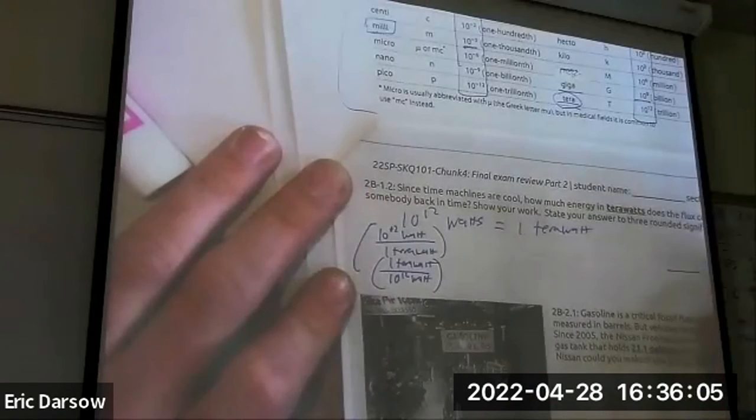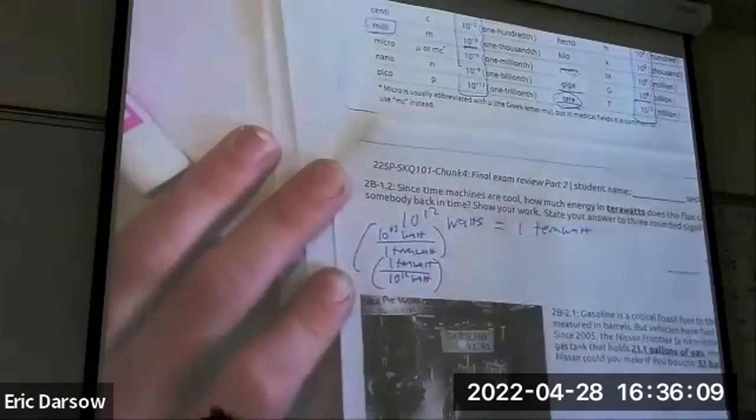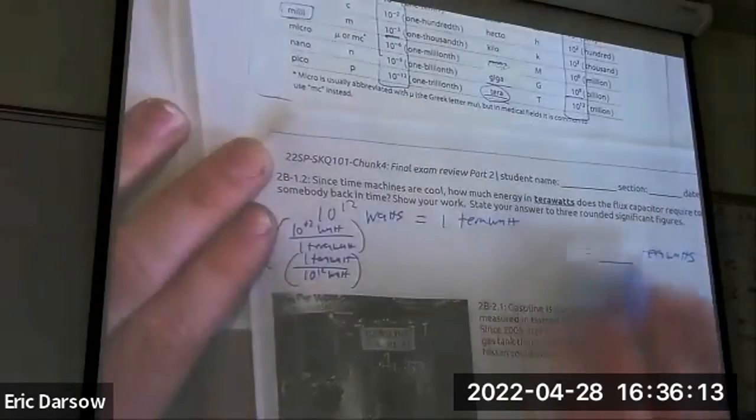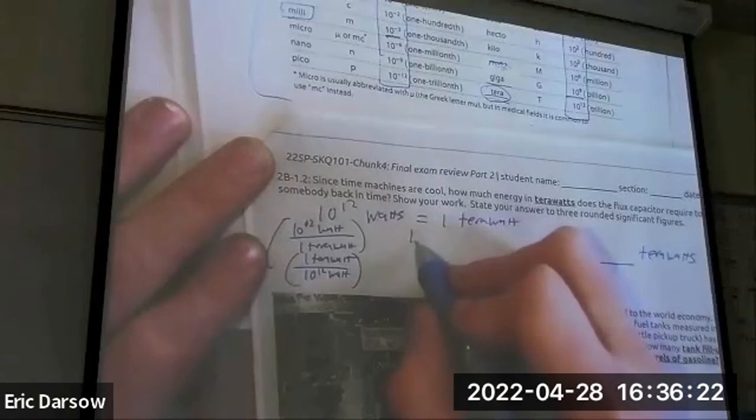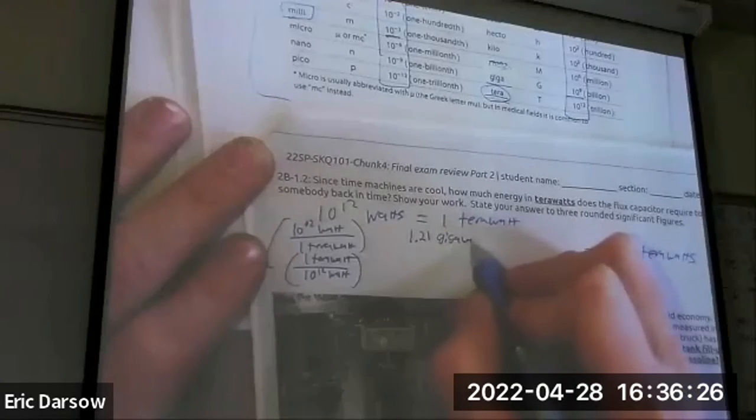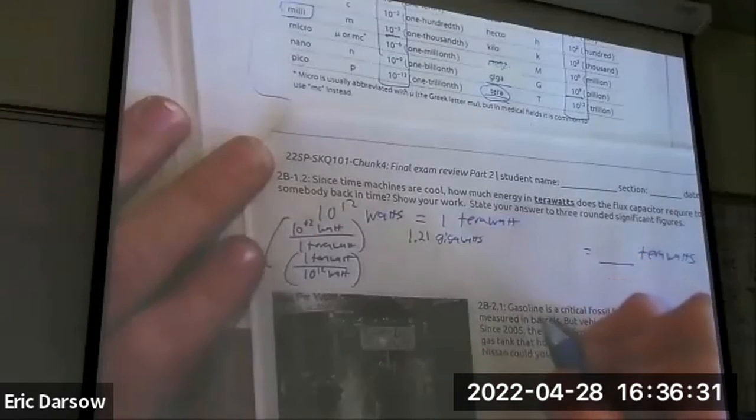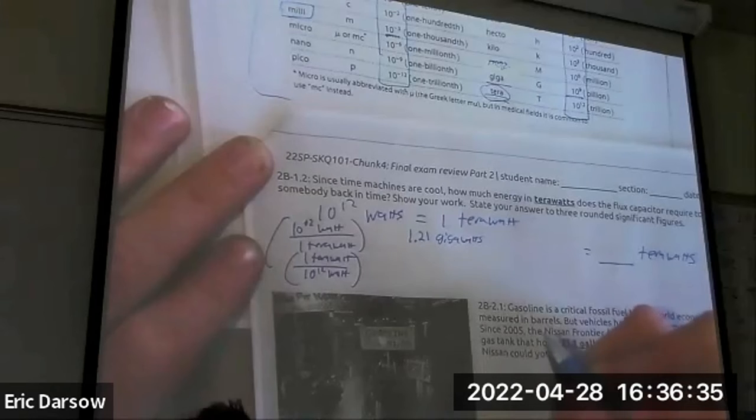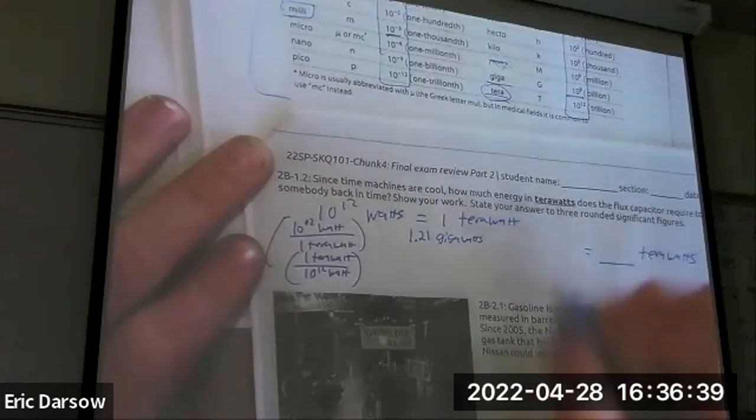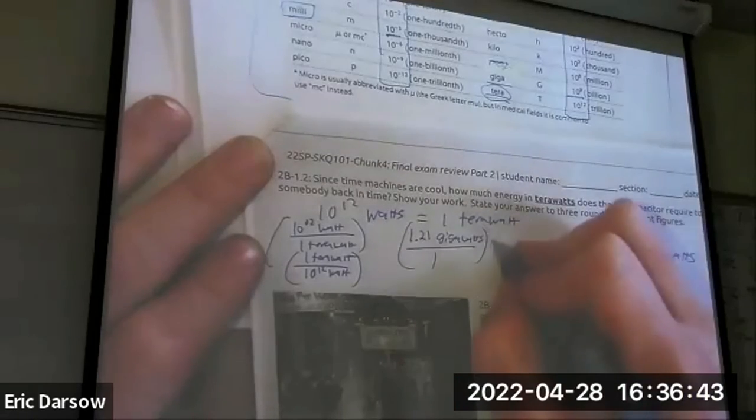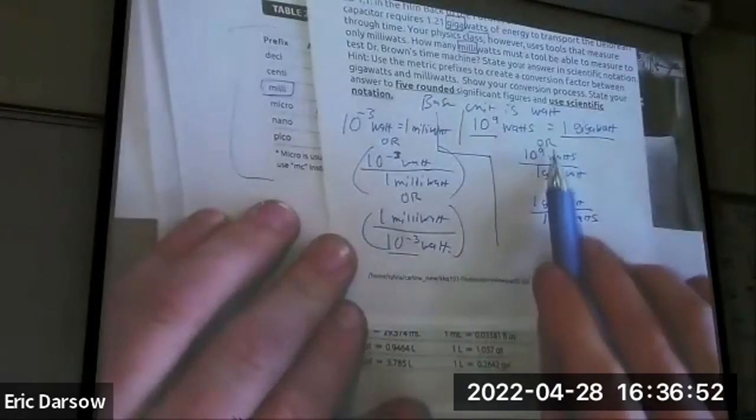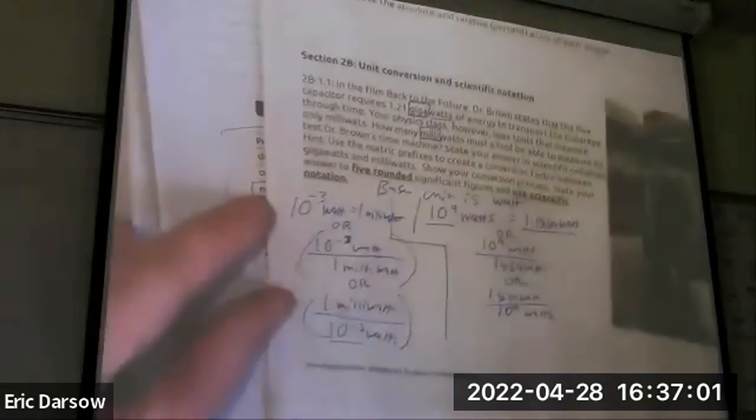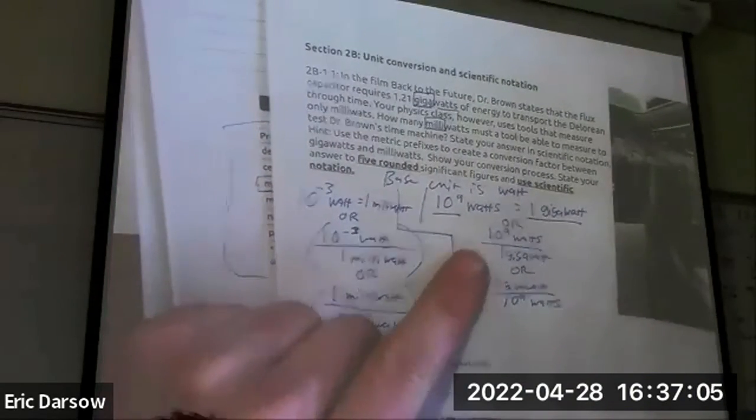Now we want to get some number of terawatts. How many terawatts does it take to go back in time? We know it takes 1.21 gigawatts. But we don't have terawatts. How do we get from gigawatts? You get watts first. We've got to go back through your base unit. Remember, go back through your base unit. We already know that to get from gigawatts to watts, we already did that. Go back to your watts. We know that 1 gigawatt is 10 to the 9th watts. So your base unit is what you're going to pivot through.